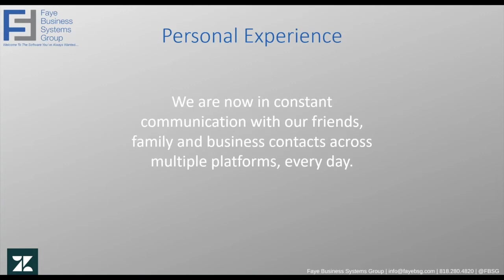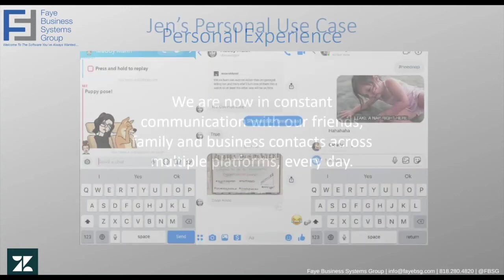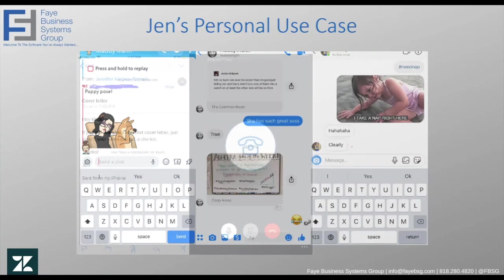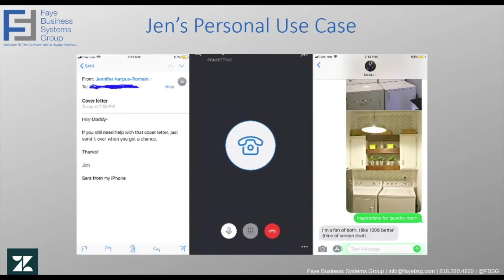I think that all conversation in business and how we communicate with each other really stems from how we talk to each other in our personal lives. In our personal lives right now, we are in constant communication with our friends, family, and business contacts on multiple platforms every day. As I was thinking about that, I looked into my own personal life, and in a 24-hour period I realized I had talked to my same friend in six different ways: Snapchat, Facebook Messenger, Instagram, and then more meaningful conversations through email, Skype, and SMS text messaging.